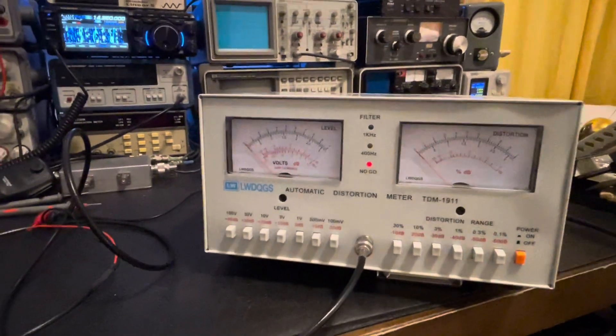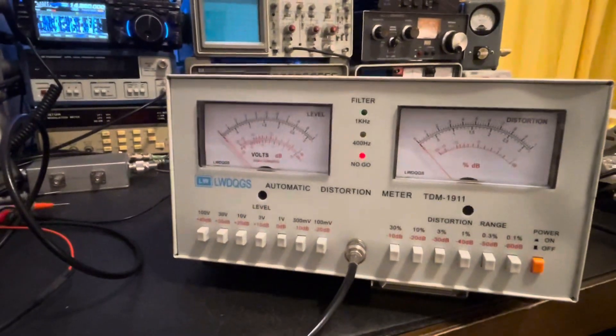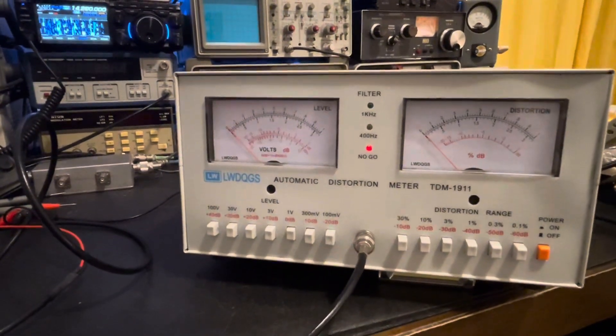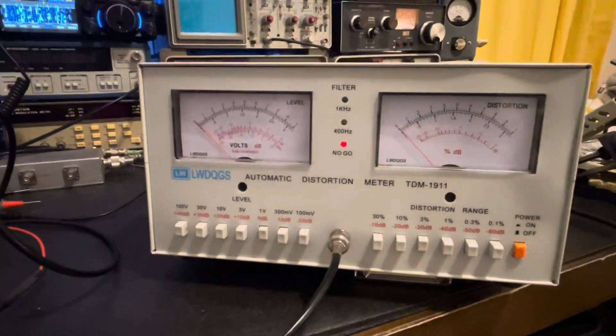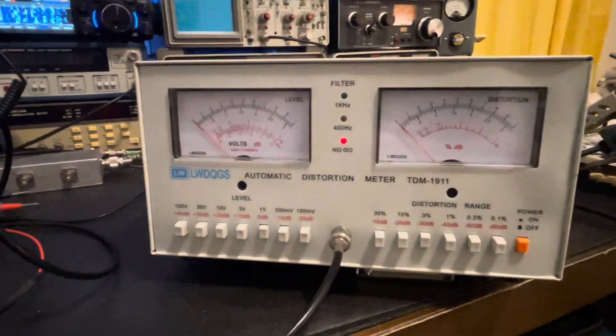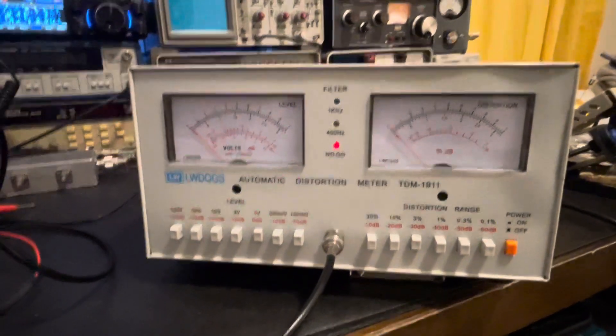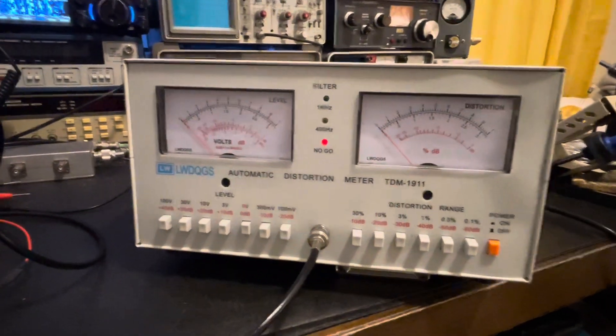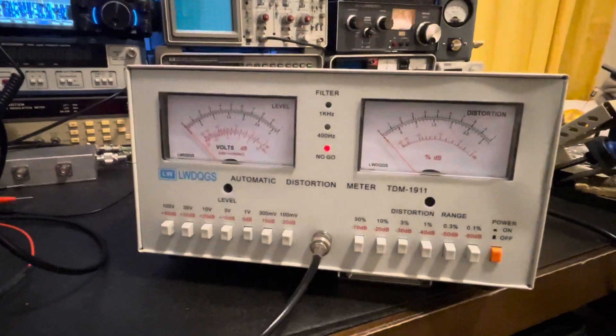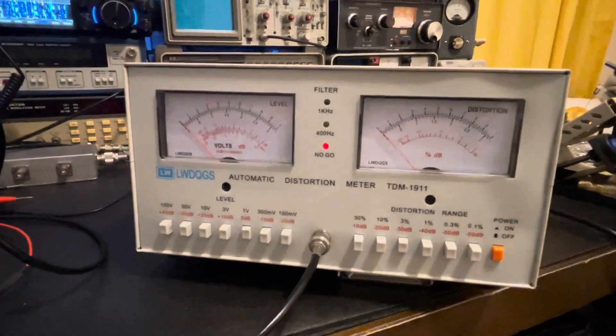All right, welcome back to the home hobby bench folks. Tonight we've got this LWDQGS automatic distortion meter model TDM-1911. I bought this probably over four years ago direct from China for about 125 bucks, and now if you look on eBay these things are running about 250 to 290 depending on the supplier.